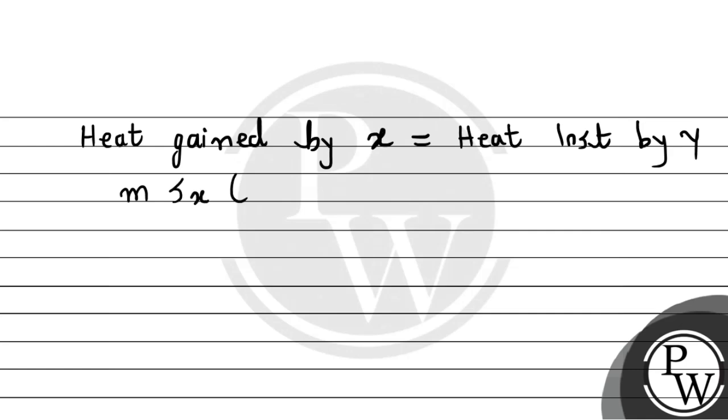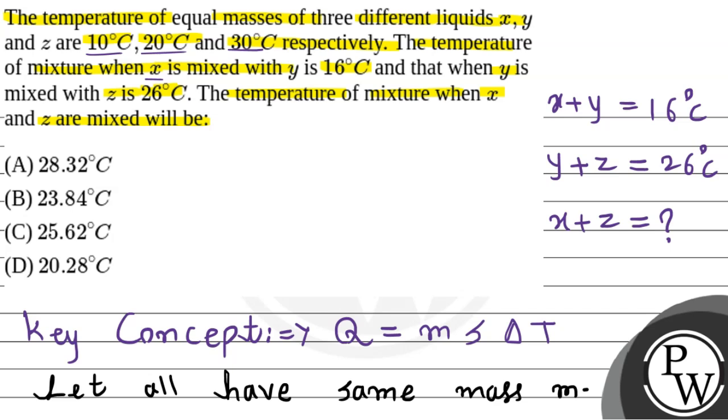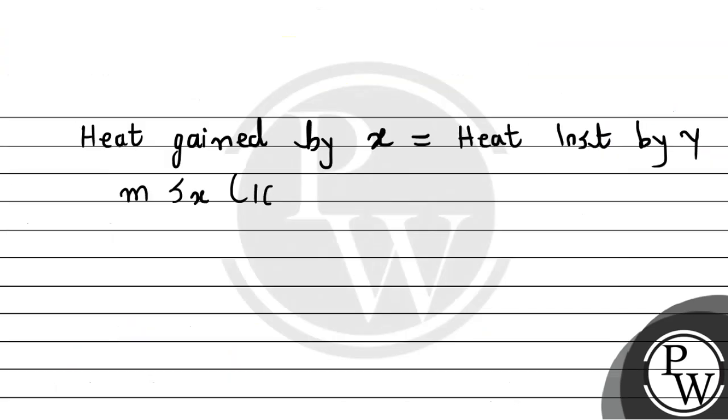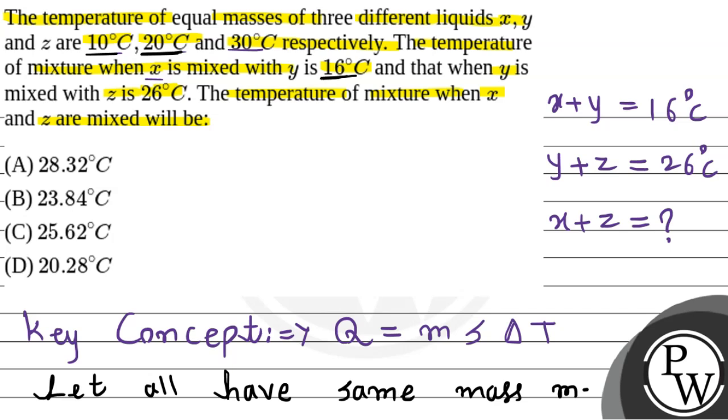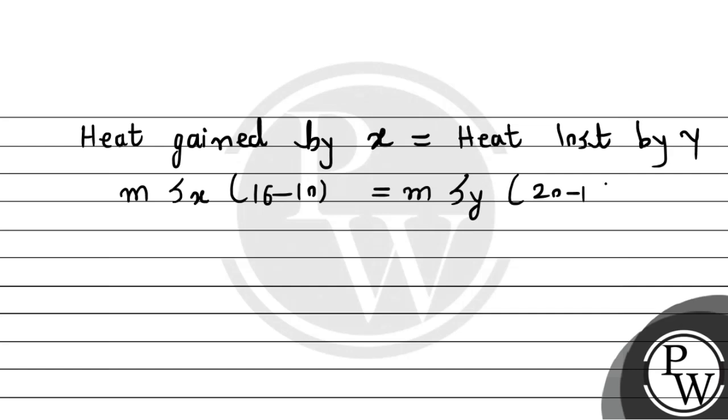So for these two, we apply the formula. This will be M, S of X. Final temperature is 16 degree Celsius for X, Y. And for X the initial temperature is 10 degree Celsius. So this will be 16 minus 10. This equals heat lost by Y. So this will be M, S of Y. Now for Y the final temperature is 20 and initial temperature will be 16. So this is 20 minus 16. So M cancels out. Simplifying, we get S of X comes out to be 2 divided by 3 times S of Y. This will be equation number 1.